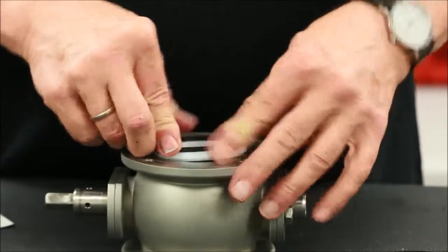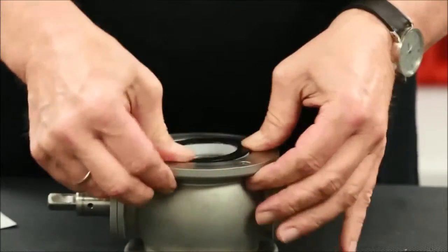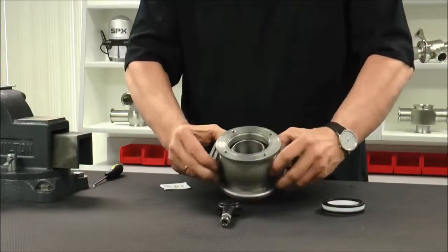Firmly but gently install the seal flange so that it is level with the housing surface. Repeat this process on both seal flanges.